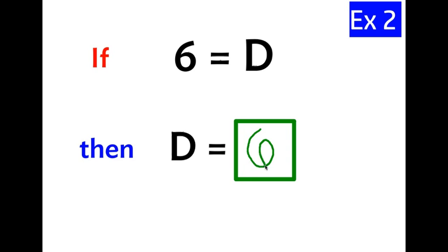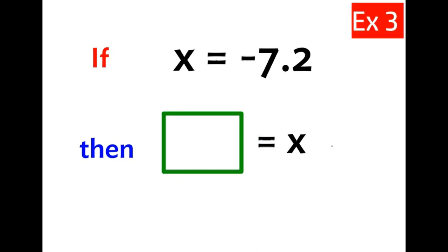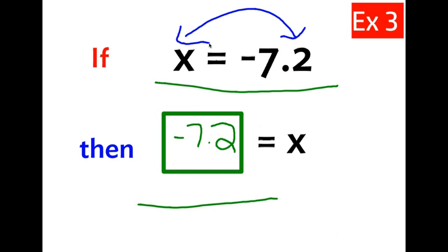Example three: if X equals negative 7.2, then what number is equal to X? Now we use X a lot in math. I don't exactly know the history behind it. I probably should. I like to think of it as X marks the spot, as in trying to find the hidden treasure and you put an X on a map. Anyway, if X is equal to negative 7.2, then what number is equal to X? Well, just like the previous examples, that would be negative 7.2.